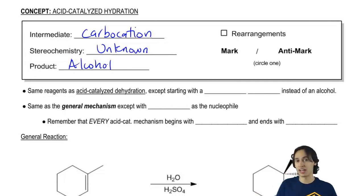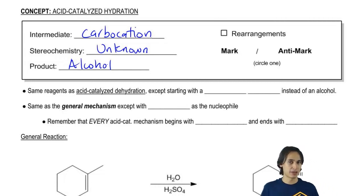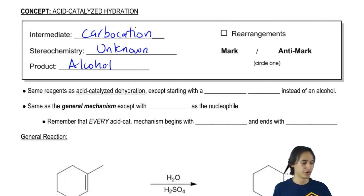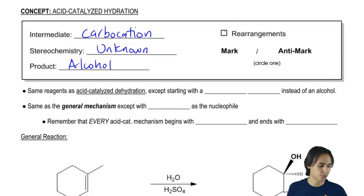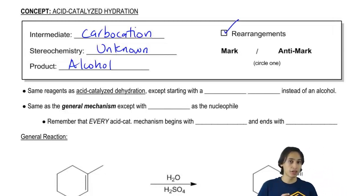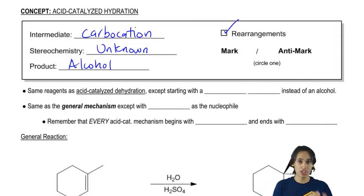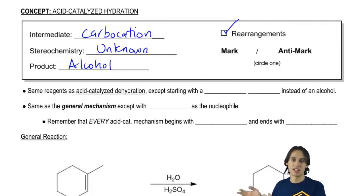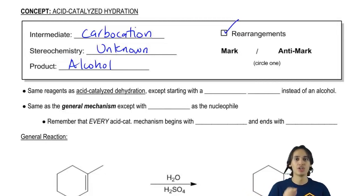Because we have a carbocation as our intermediate, we're going to expect rearrangements. Carbocation rearrangements happen any time you have a carbocation intermediate, so we definitely need to be expecting that.